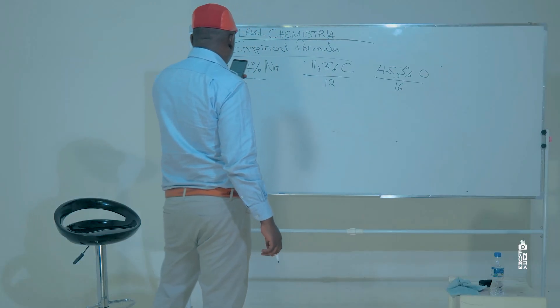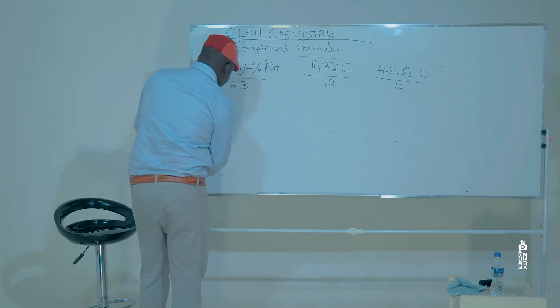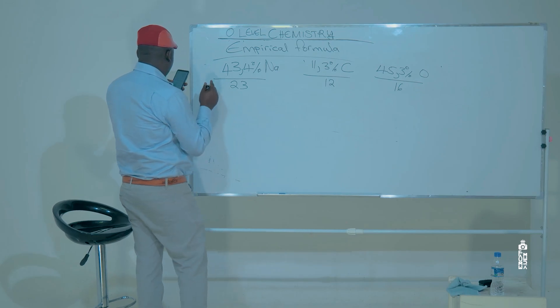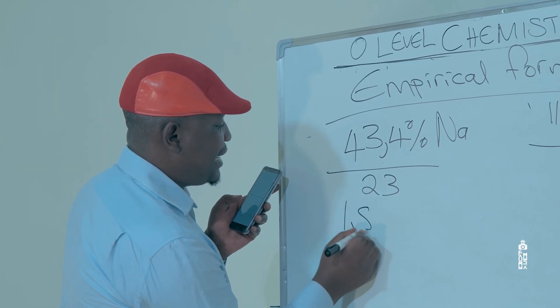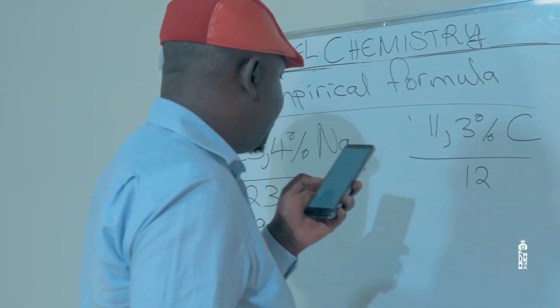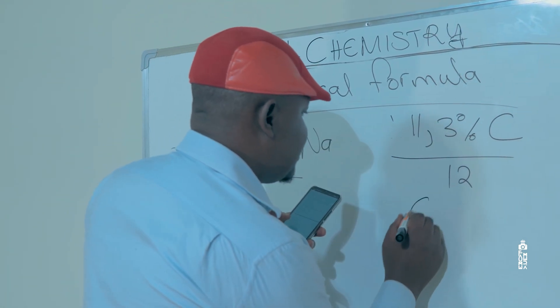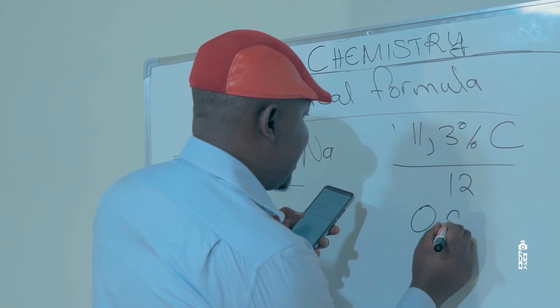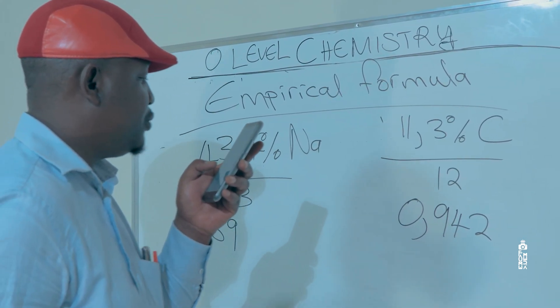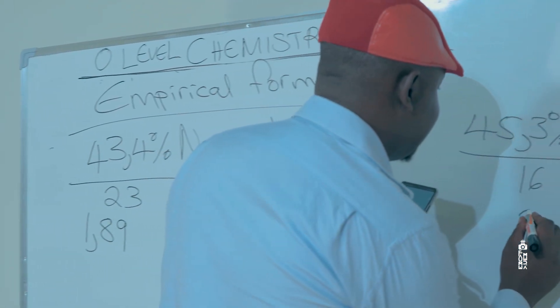So upon division we are going to get the following numbers: if we divide 43.4% divided by 23 we're going to get 1.89, and then on this one we are going to get 0.942, and for that one we're going to get 2.83.